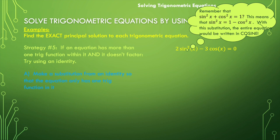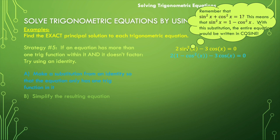So let's replace sine squared of x with one minus cosine squared of x. Now the only function I see is cosine, and that's good — this will allow me to solve the equation. Let's clean it up and distribute the two through to both terms. I would end up with two minus two cosine squared of x minus three cosine of x is equal to zero. It looks like it might be quadratic, so let's put it in standard form with the cosine squared term in the front and make it positive.